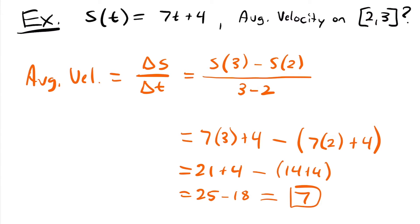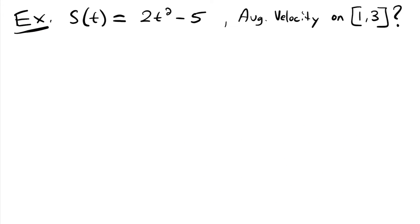If position was measured in feet and time in seconds, this would be a rate of 7 feet per second — the units of position divided by the units of time. Next, we're going to look at the position function 2 times t squared minus 5, and find the average velocity on the time interval from time equals 1 to time equals 3.